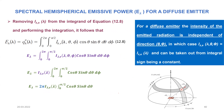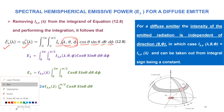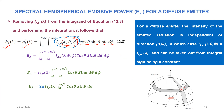Recalling the previous equation for the spectral emissive power e_lambda, also called spectral radiant flux, equation 12.8 was given by the integral of I_lambda_e(lambda, theta, phi) multiplied by cos(theta) sin(theta) d(theta) d(phi). Because we are now considering a diffuse surface, the intensity I_lambda_e is independent of theta and phi. Since there is no d_lambda in equation 12.8, we can take I_lambda_e outside the integration sign.